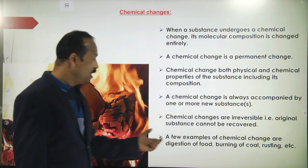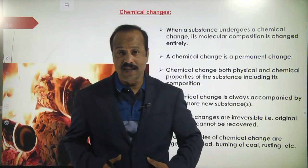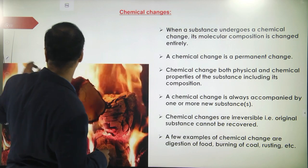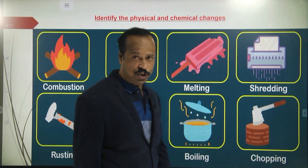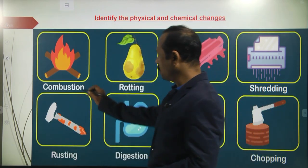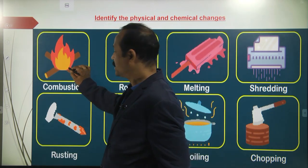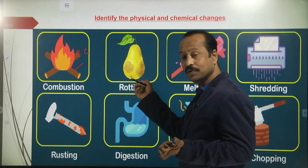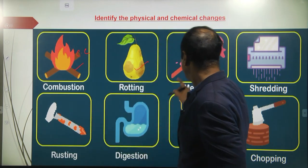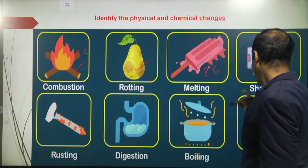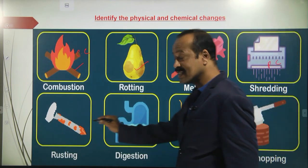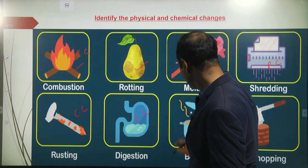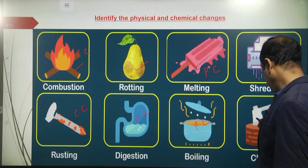Chemical change examples include burning of wood, rusting, and digestion of food. If you eat something and it gets digested in the stomach, can you convert the digested food back into the original food? No — this is a chemical change. Now let's identify a small test: combustion — wood burning — is a chemical change. Rotting of a fruit is also a chemical change. Ice melting is a physical change. Shredding is also a physical change. Rusting is a chemical change. Digestion of food is a chemical change. Boiling of water is a physical change. And chopping is also a physical change.